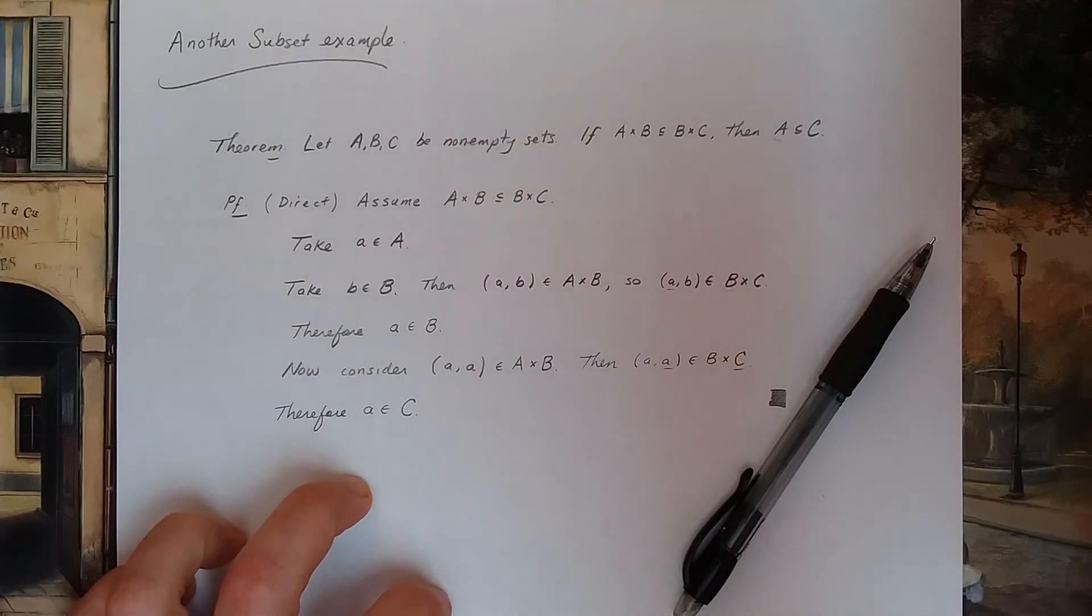Now consider the ordered pair (a, a). (a, a) is in A cross B because a is in A and a is in B. So this is a legal element in A cross B.